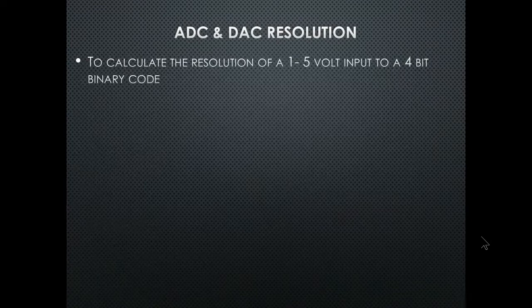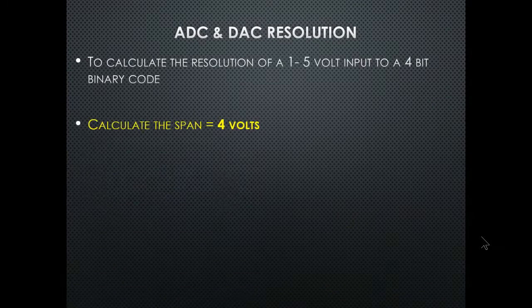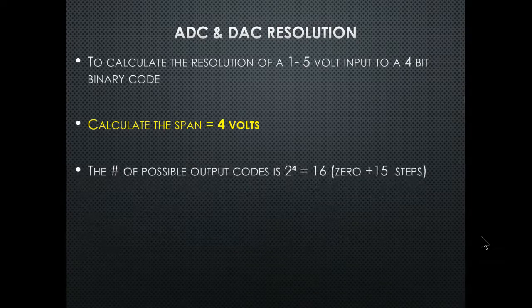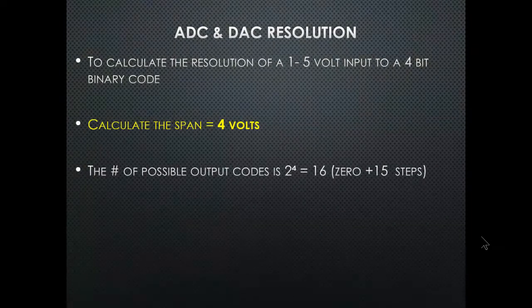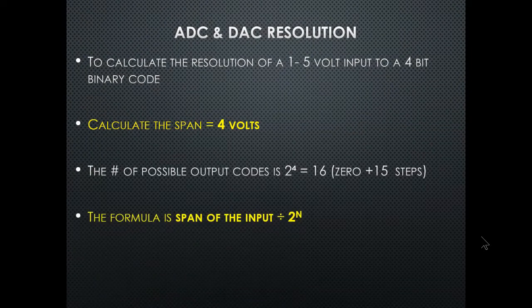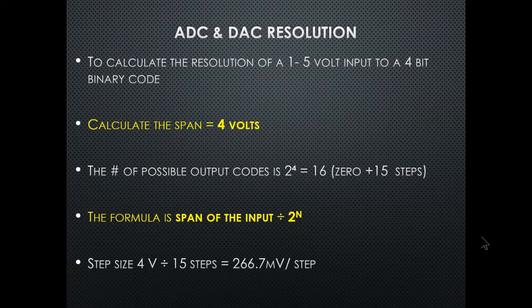To calculate resolution of a 1 to 5 volt input to a 4-bit binary code: the span equals 4 volts, the number of possible codes is 2⁴ = 16. We start at zero (binary 0000) and go up to 15, giving 16 steps. The formula is span divided by 2ⁿ. In this case, step size = 4 volts ÷ 15 = 266.7 millivolts per step.